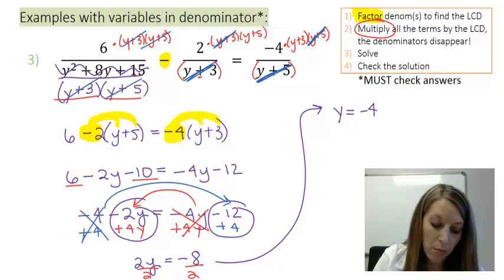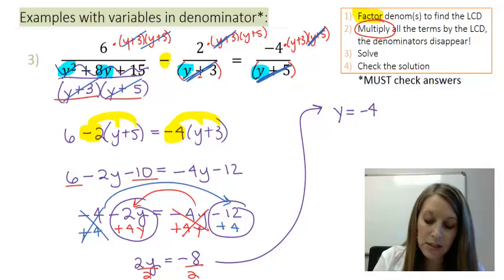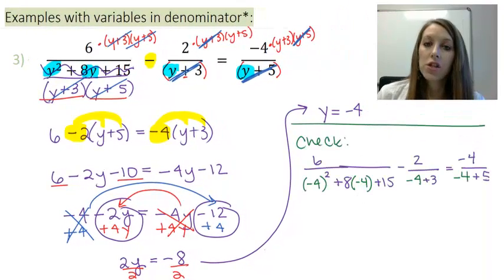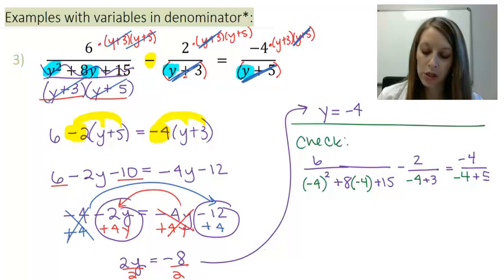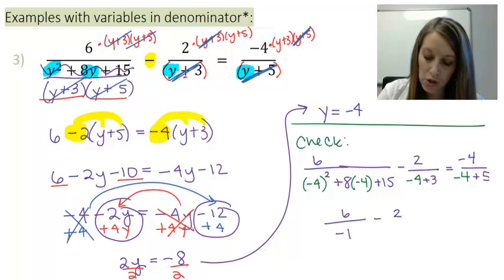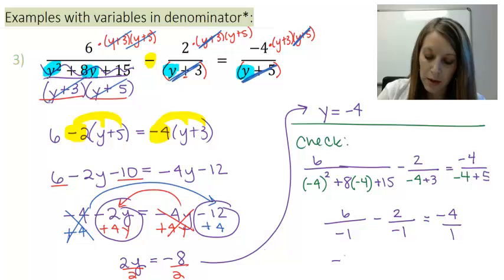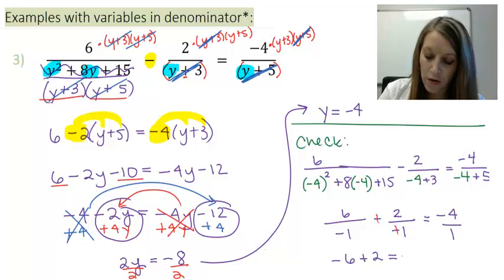Because this problem had variables in the denominator, I definitely need to check to make sure my denominator does not come out to be zero — but really, you should be checking the whole entire solution. I've substituted negative 4 in for every place where I had Y in my original equation. This gives me 6 over negative 1, minus 2 over negative 1, equal to negative 4 over 1. I do not have zero in the denominator, so that check goes through. Simplifying further: negative 6 plus 2, because the two negatives cancel, which equals negative 4. This checks out.